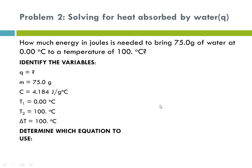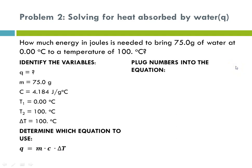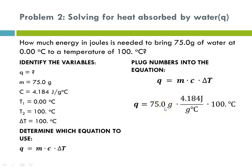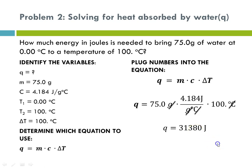Now we're ready to determine which equation. We're going to use the equation that has delta T in it: Q equals M times C times delta T. Plugging our numbers in — mass, specific heat, and delta T — we check our units: grams divided by grams cancels, degree C divided by degree C cancels. Q comes out to 31,380 joules. Checking sig figs, three sig figs applies, and the number immediately following the third digit is an eight, so it rounds to 31,400 joules.